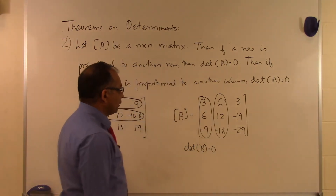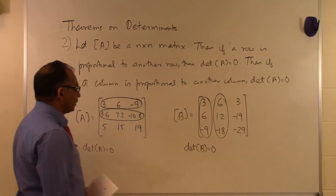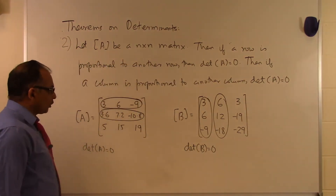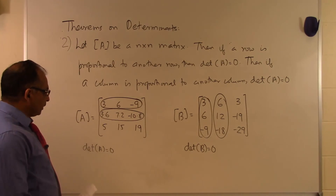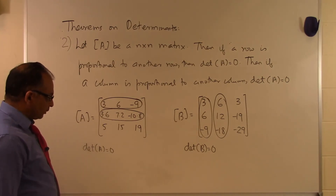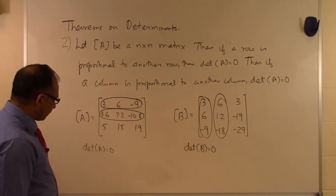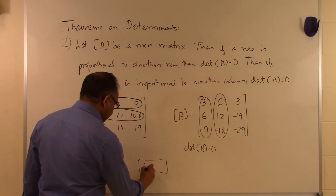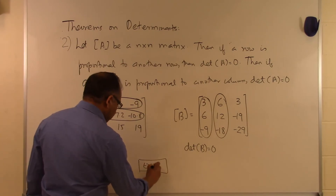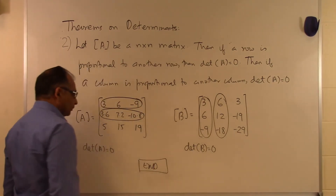So to summarize: if a row is proportional to another row, or if a column is proportional to another column, then the determinant of the whole matrix is equal to zero. And that's the end of this segment.